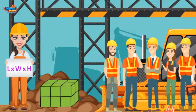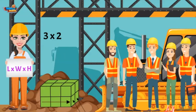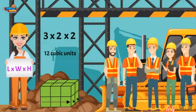The length is three cubes and the width is two cubes. This means the base of the model is three times two, which equals six cubes. Now we find the height of the model — it is two cubes high. This means there are two layers of six cubes, or two times six, which equals twelve.